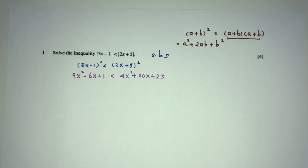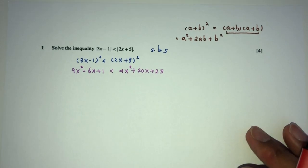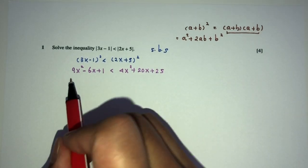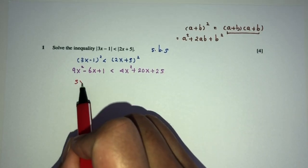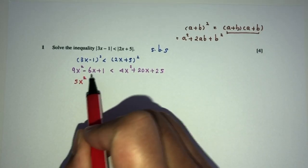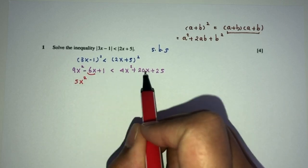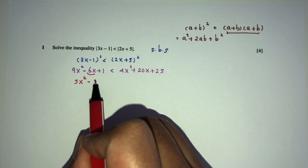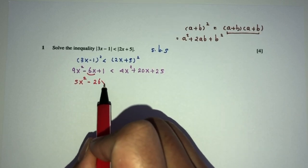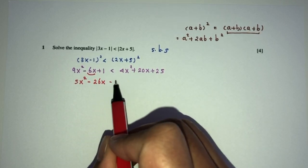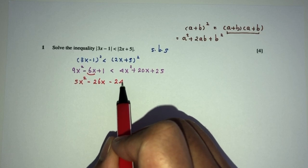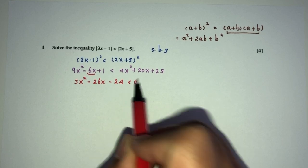Now, what's next? We have to send everything to one side. 9 minus 4 is 5x squared, minus 6 minus 20 should be minus 26x, plus 1 minus 25 should be minus 24, less than 0.